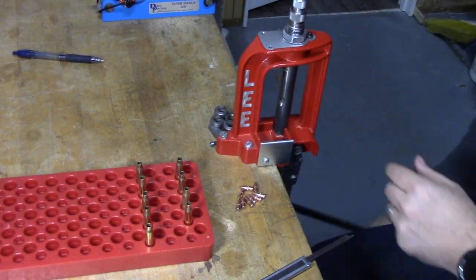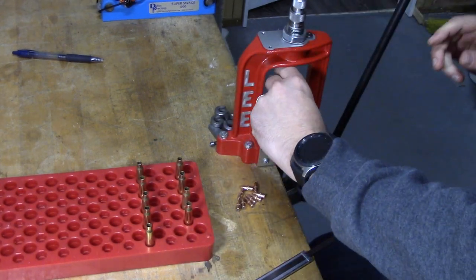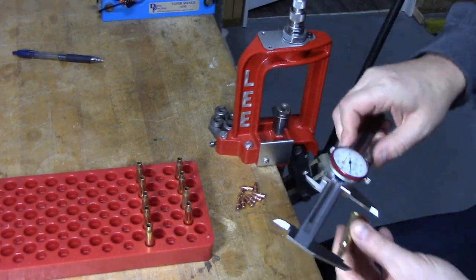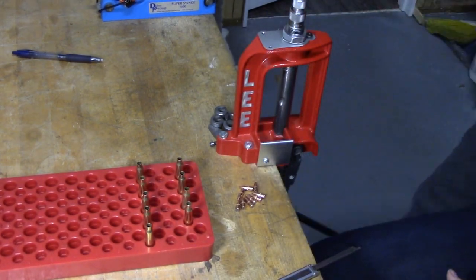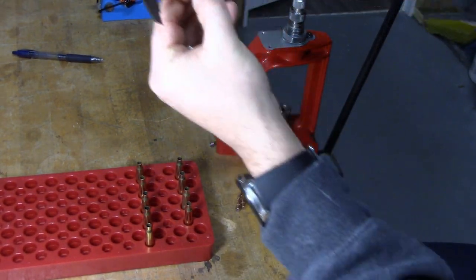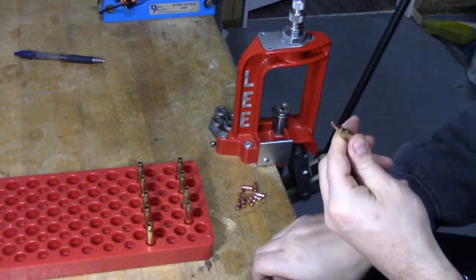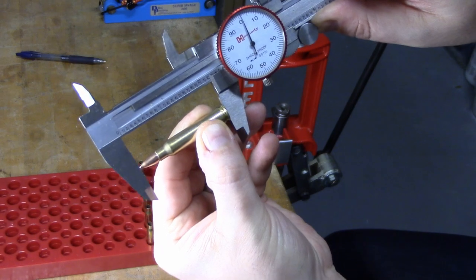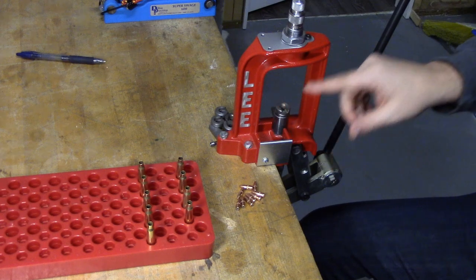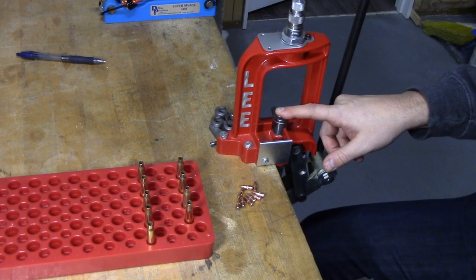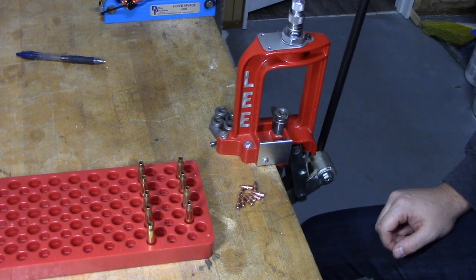We're going to turn it. 2.206. Alright, 2.204. So on a small turn, we should be right where we want to be. 2.201. Just a little turn. Alright, we're right where we need to be. So now that we have our seating die set up so that it's seating to the right length, we would just repeat this process for the rest of the charged cases.